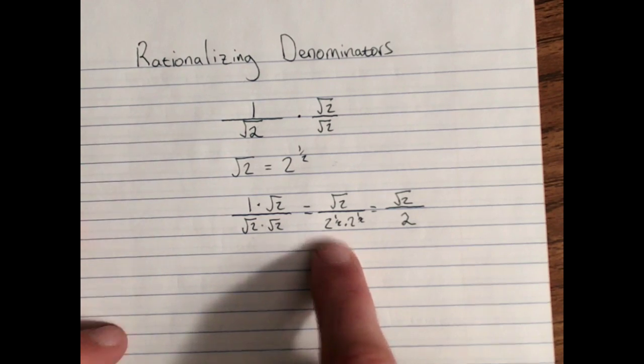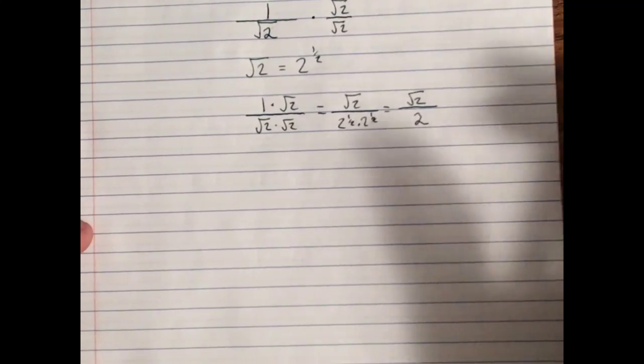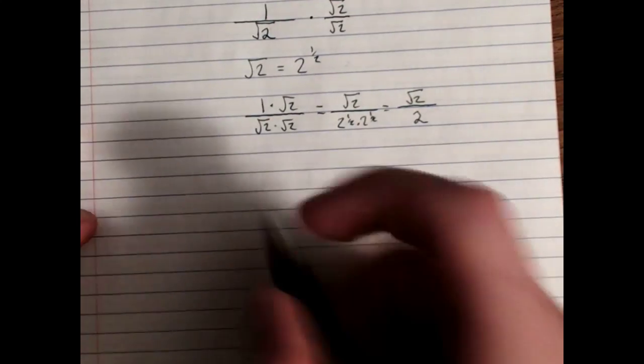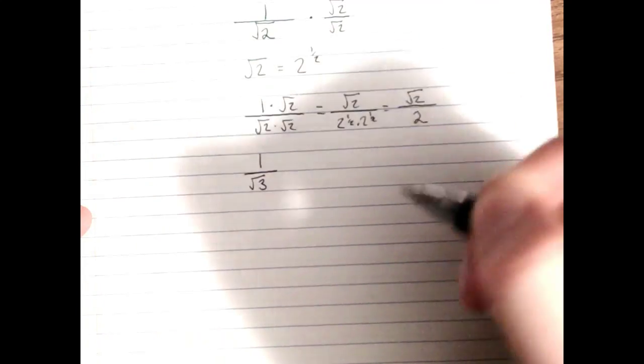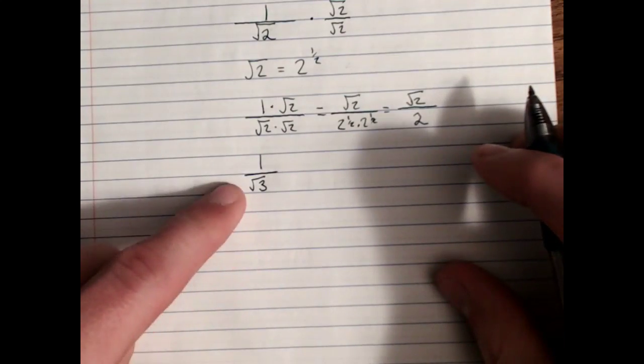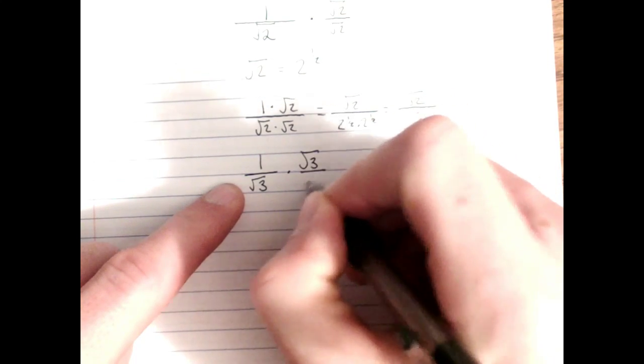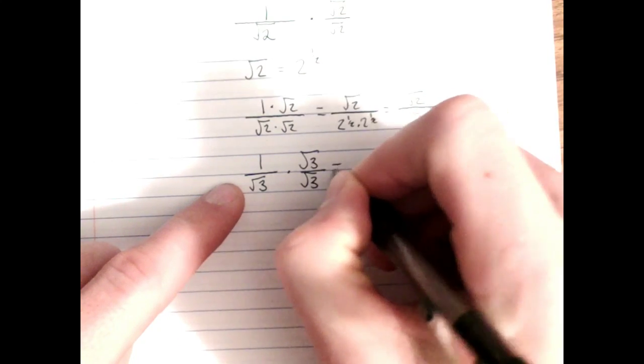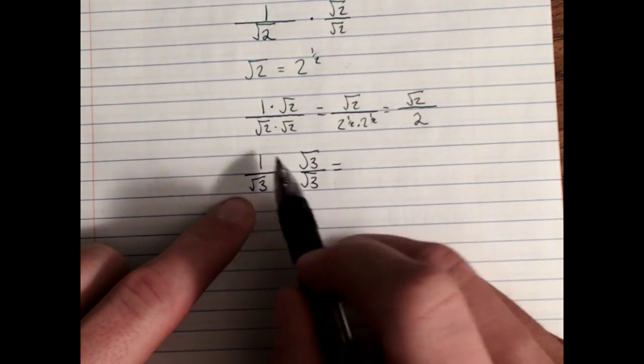So let's just do another example. You should see the pattern fairly soon and then we can move on to more complex examples. We've got 1 over root 3. We're going to multiply creatively by the number 1. Root 3 divided by root 3 is equivalent to 1, and now numerator times numerator, denominator times denominator. 1 times root 3 is root 3.